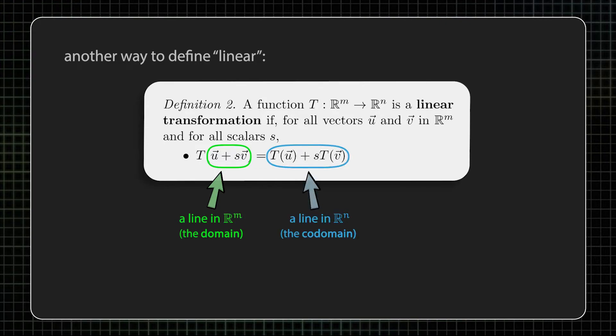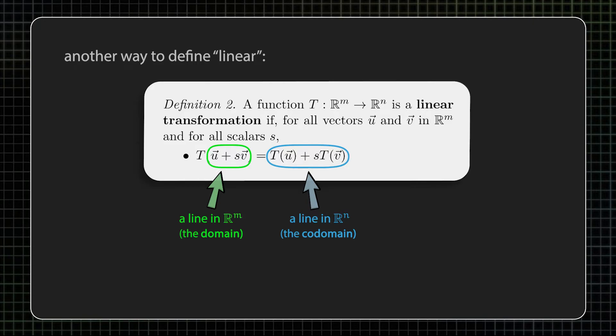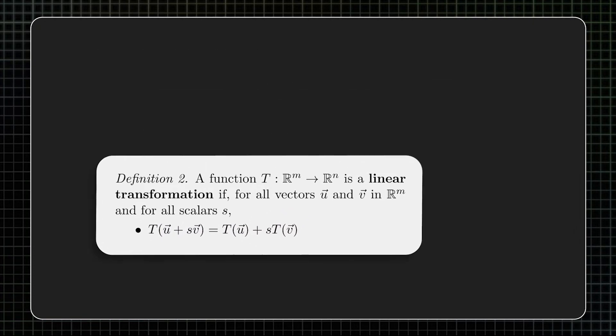a function T is linear if T(u + sv) = T(u) + sT(v) for all vectors u and v and for all scalars s.